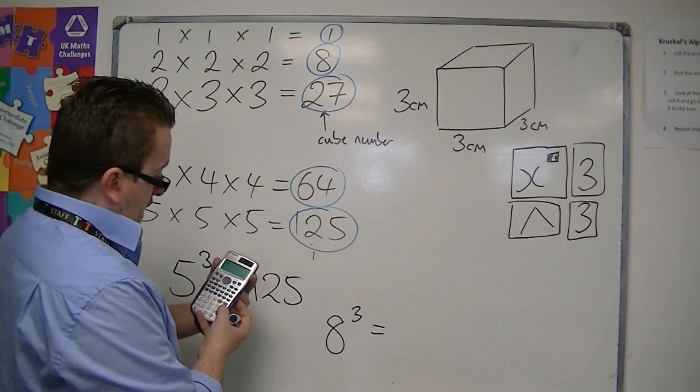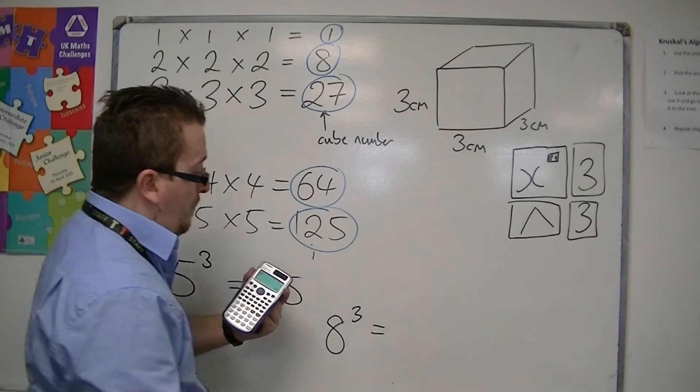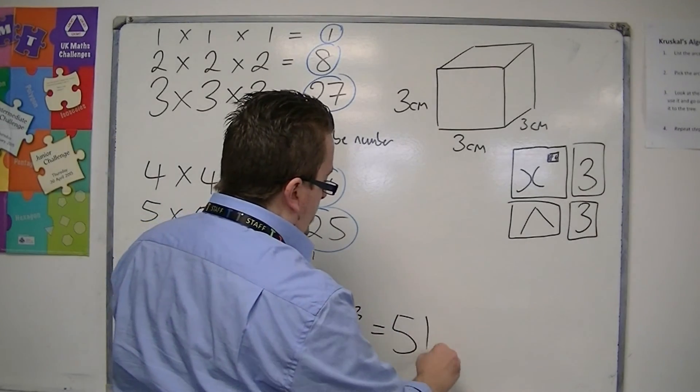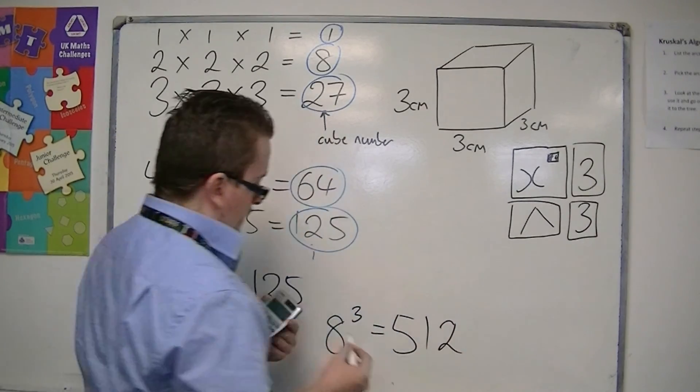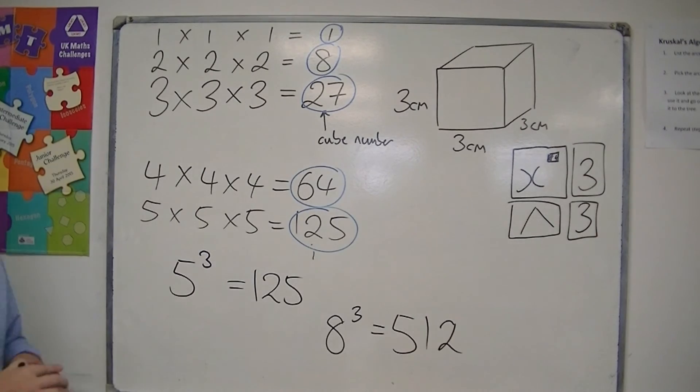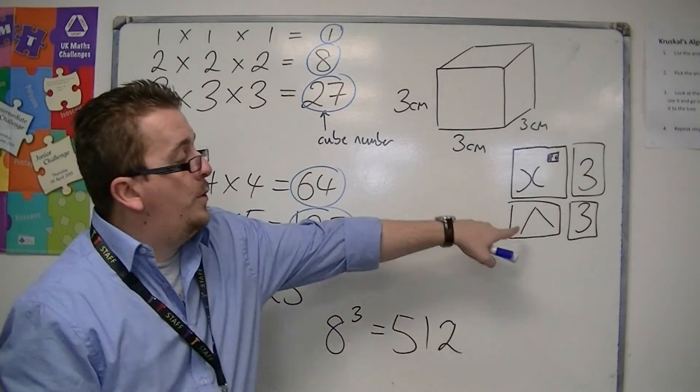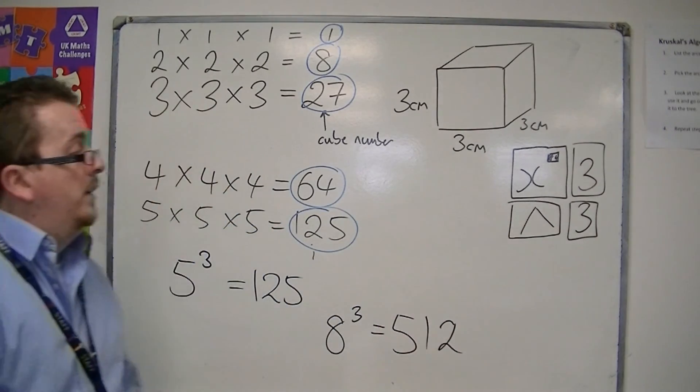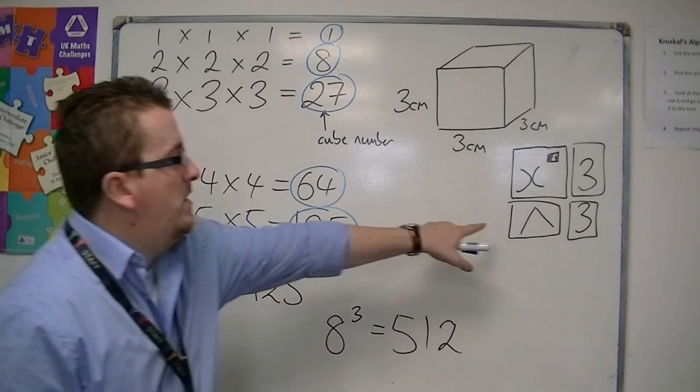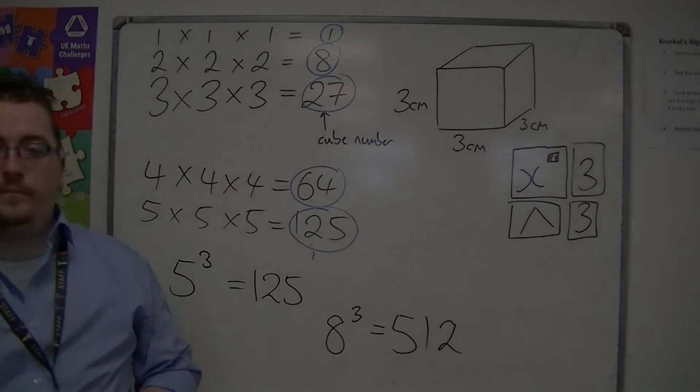So, 8 to the power of 3, press the equals button, and you should get 512. Okay, so as I say, different calculators will do it in slightly different ways, but you should really probably have one of these two buttons.